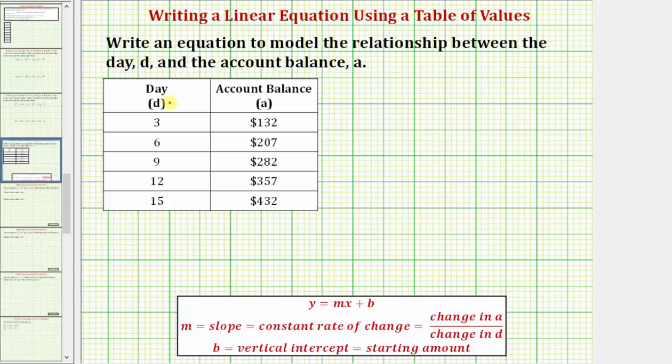Looking at the first column, notice how the days are increasing by three each time. Three plus three is six, six plus three is nine, nine plus three is twelve, and twelve plus three equals fifteen.